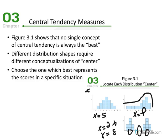These are things to consider to determine the best measure of central tendency — which X value best represents all the other values. Figure 3.1 shows that no single concept of center is always the best. Different distribution shapes require different conceptualizations of center: symmetrical, skewed, or bimodal. We must choose the measure which best represents the scores in a specific situation.